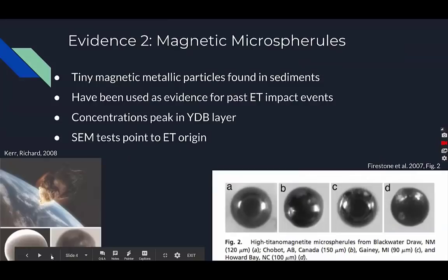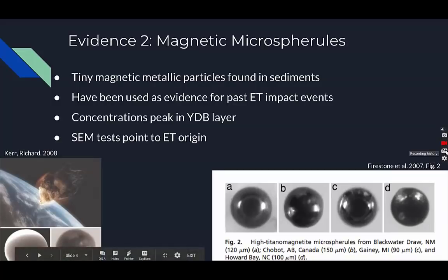Another piece of evidence is magnetic microspherules. Like nanodiamonds, they have been associated with previous extraterrestrial impact events, and their concentrations also peak in the Younger Dryas boundary layer. Microspherules can also be formed through volcanic activity, but scanning electron microscope analysis of Younger Dryas boundary microspherules proves that they had non-volcanic origins. In conclusion, the sediment record shows clear support for the theory that the Younger Dryas period was caused by an extraterrestrial impact event.